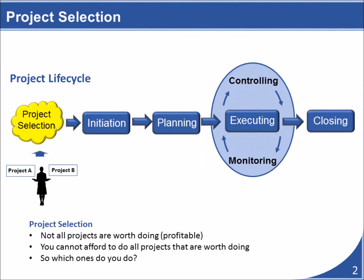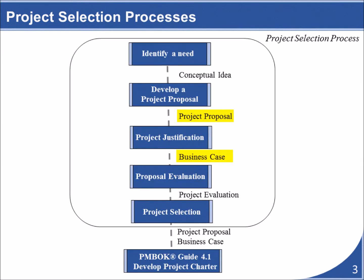Project cost justification usually occurs prior to the project being initiated. Often companies cannot afford to pursue all projects — they need to prioritize and rank their projects to determine which ones are the most advantageous to proceed with. A project begins by someone having an idea and recognizing that a need or a gap in capabilities exists within the organization, and a project proposal is prepared to fill that need.